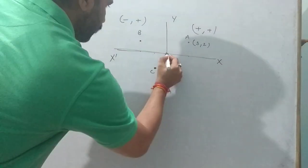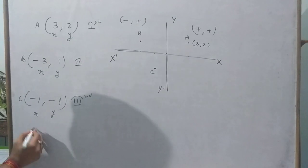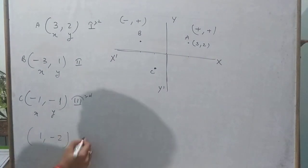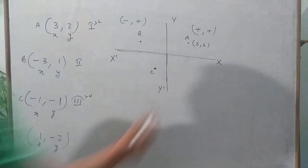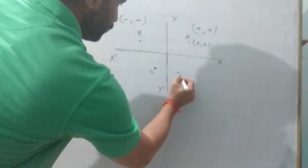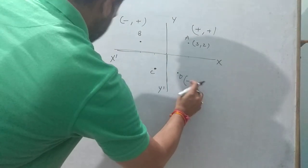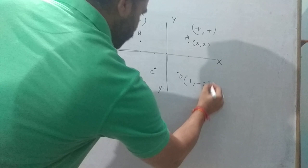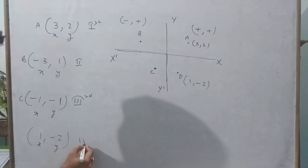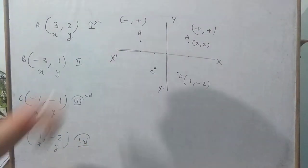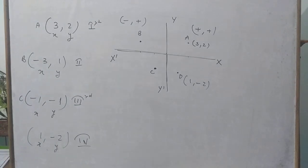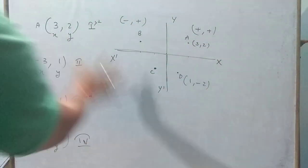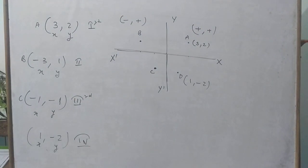Since X is negative and Y is also negative, the point (-1, -1) lies in the third quadrant. For the point (1, -2), X is positive and Y is negative, so this point D lies in the fourth quadrant. This is the procedure we adopt to plot a point in the Cartesian plane.